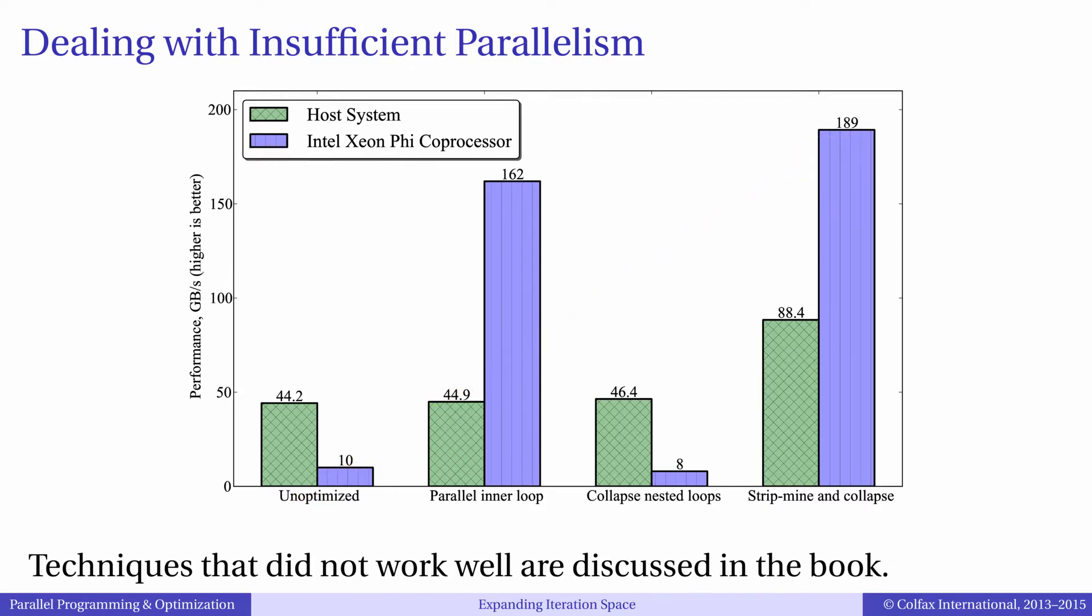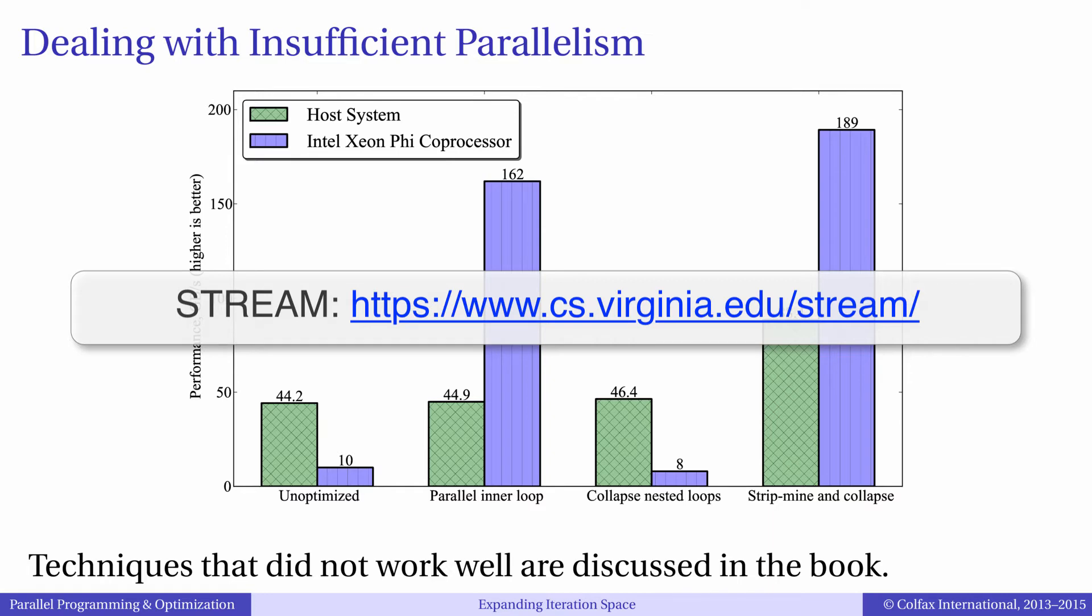In the end, the Xeon Phi native application performs more than twice as fast as the host application. The values of our measurement are slightly higher than the results of the stream benchmark in the copy test.